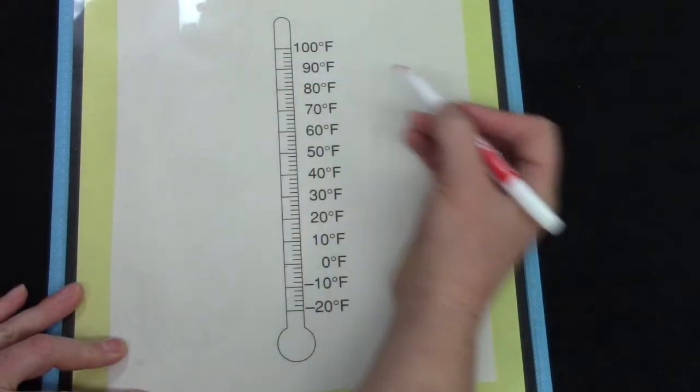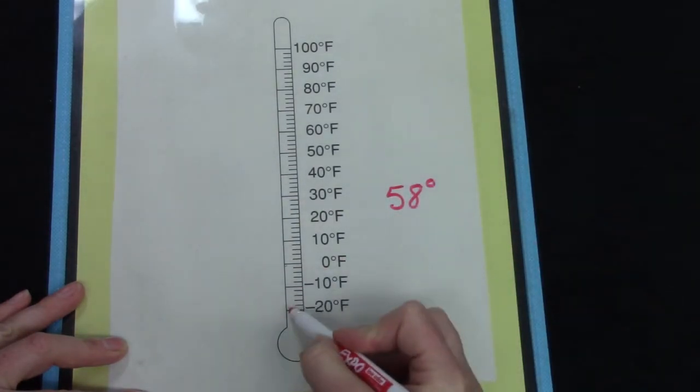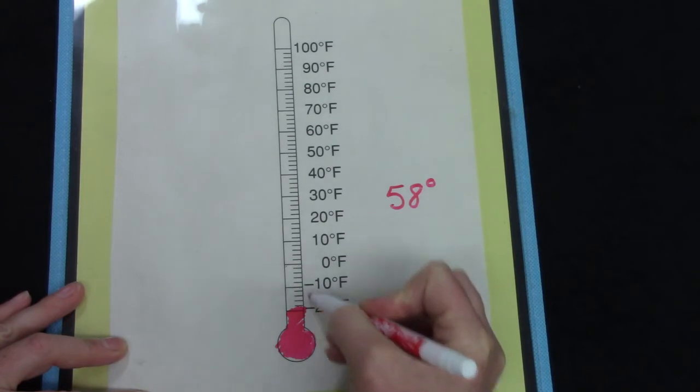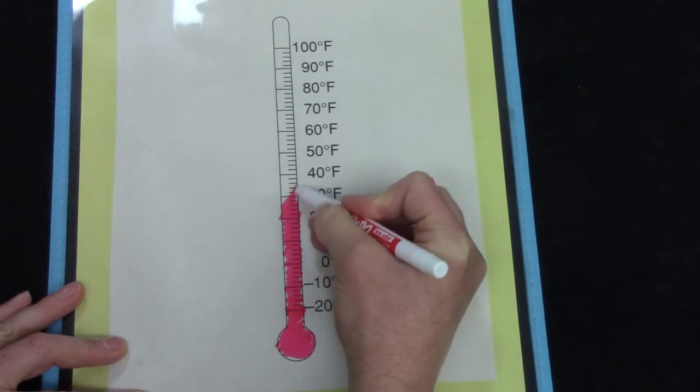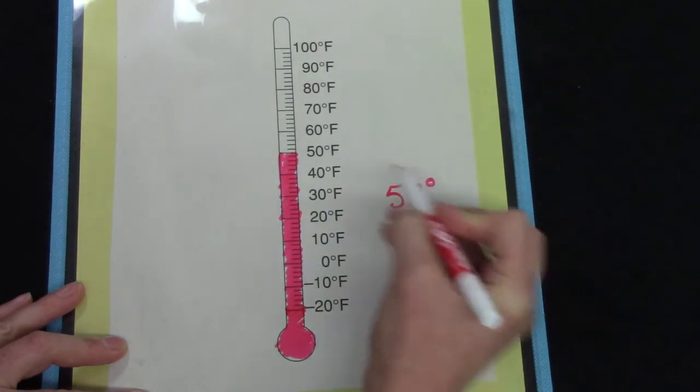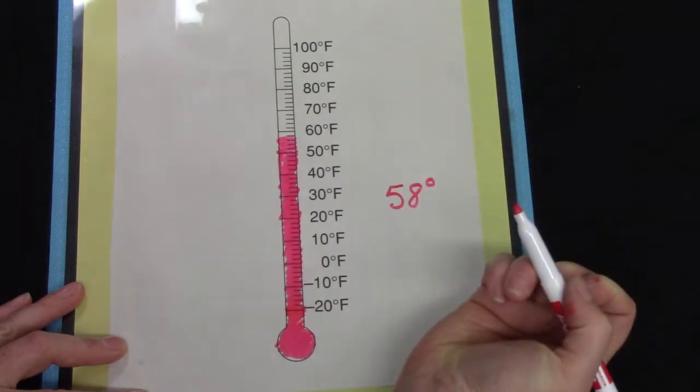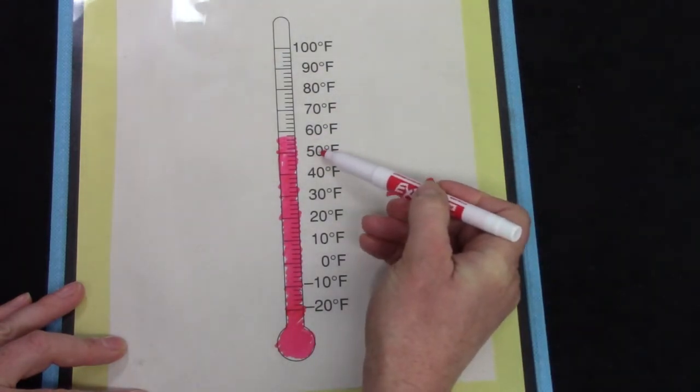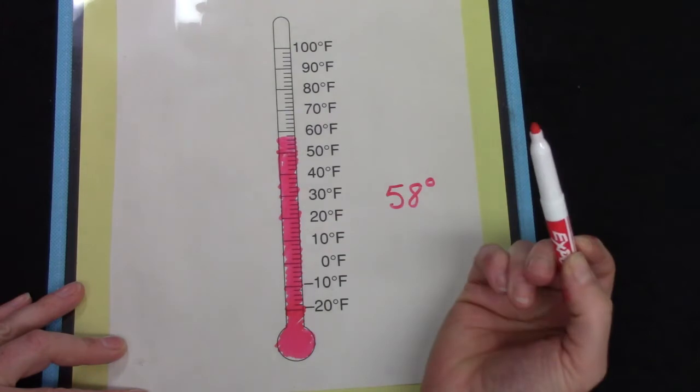I'd like for us to find 58 degrees on our thermometer. And I'm going to fill it in because often thermometers, the red mark indicates the temperature. So I'm going to fill in the red all the way up to 50. But we need to go to 58. So we're going to count by 2. 52, 54, 56, 58. 58 degrees is between 50 and 60. It is almost up to 60. We just have 2 more degrees.